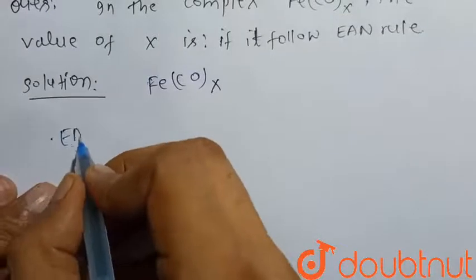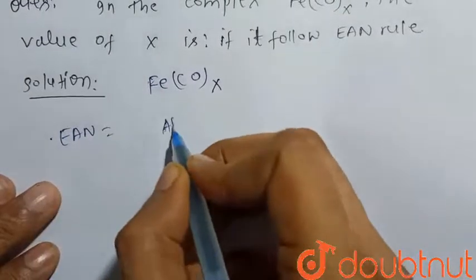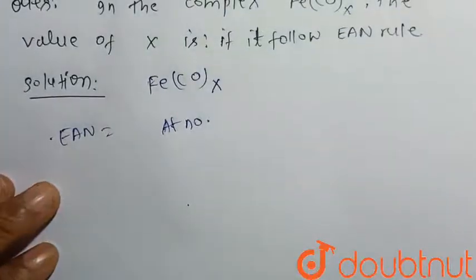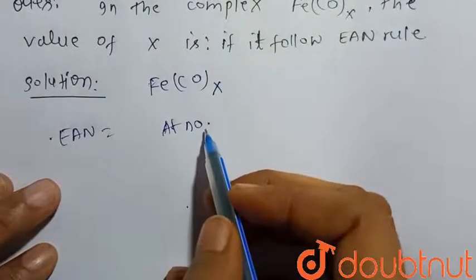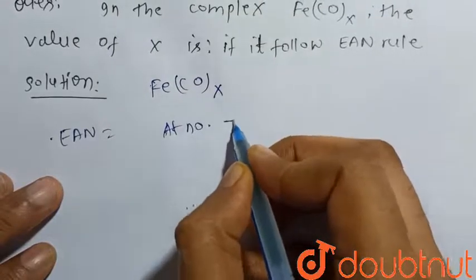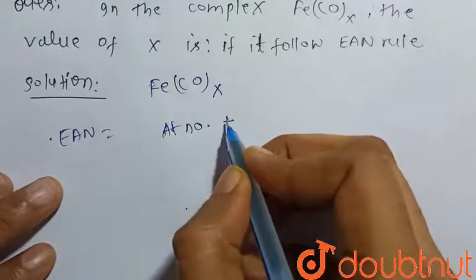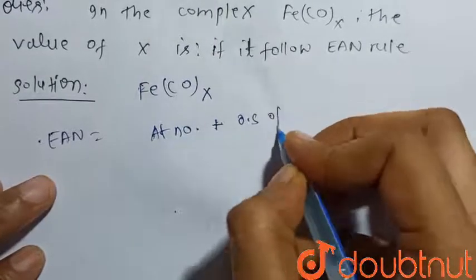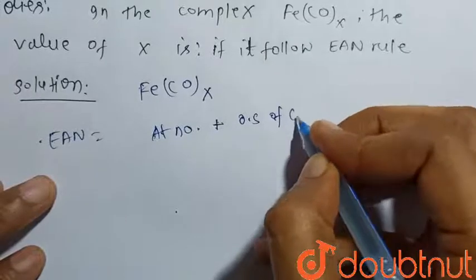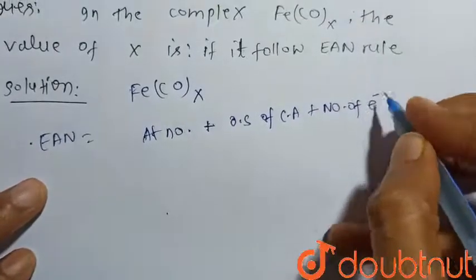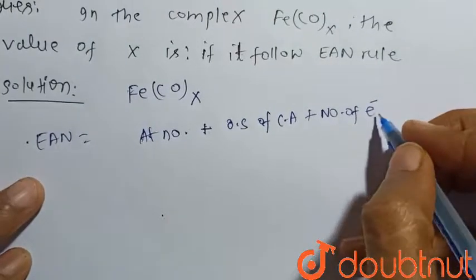So we know that EAN is calculated as atomic number of the central atom, plus oxidation state of central atom, plus number of electrons donated by ligand.